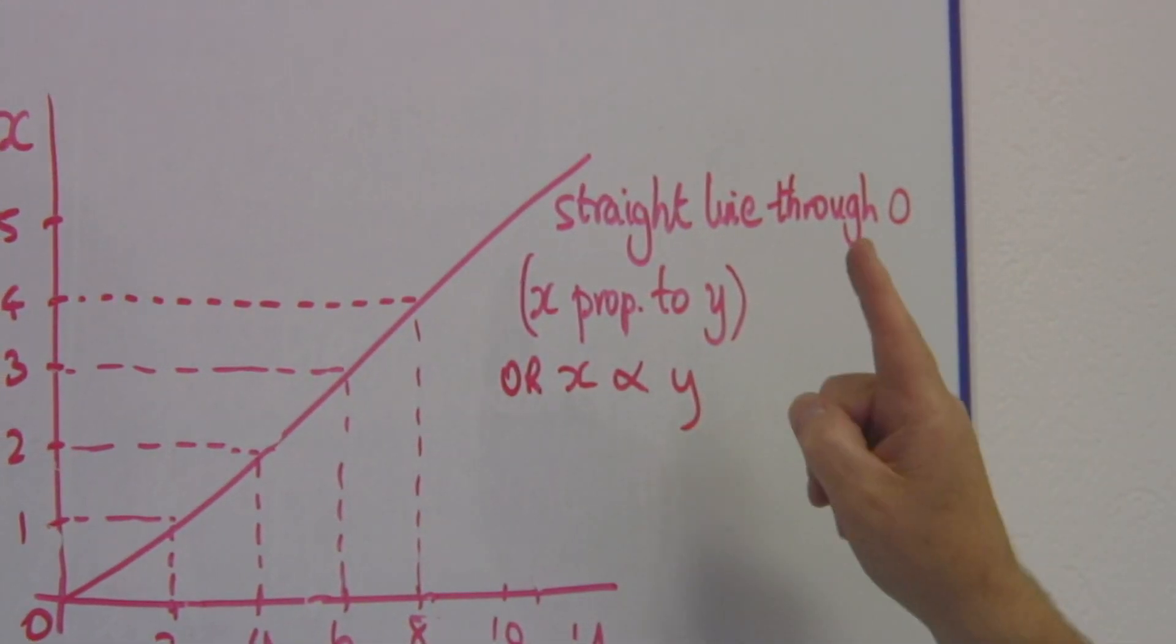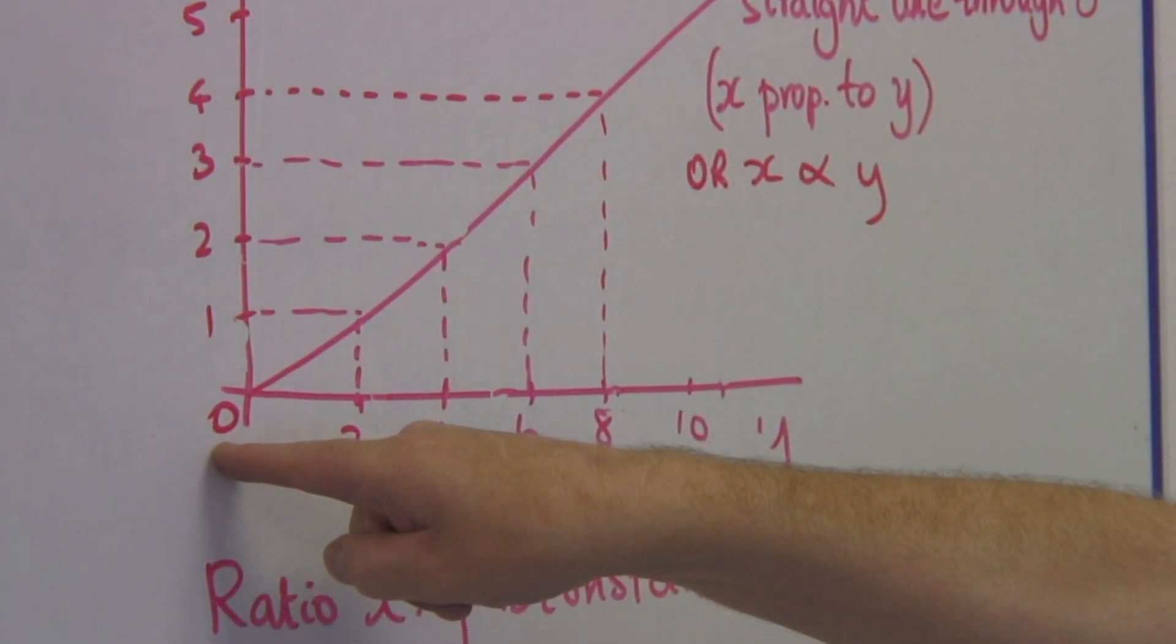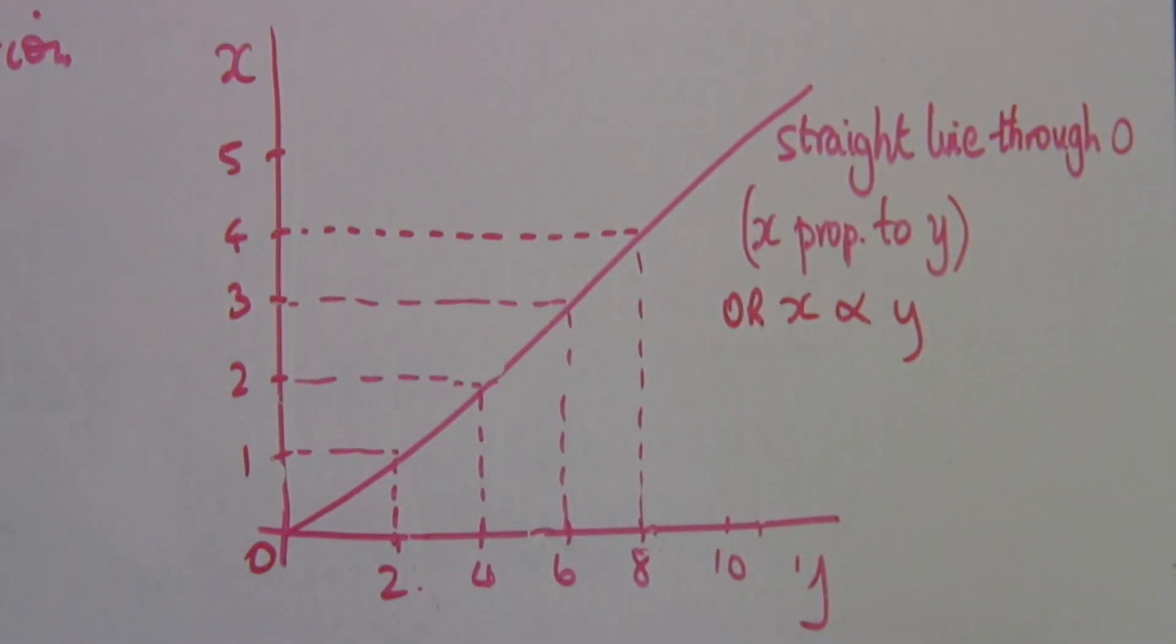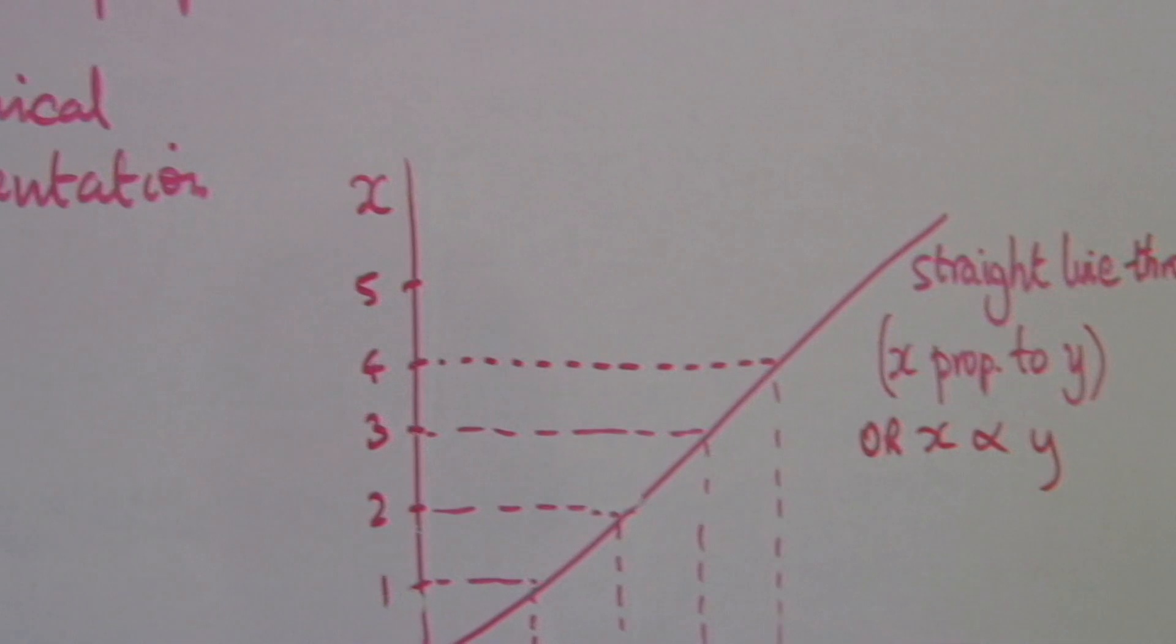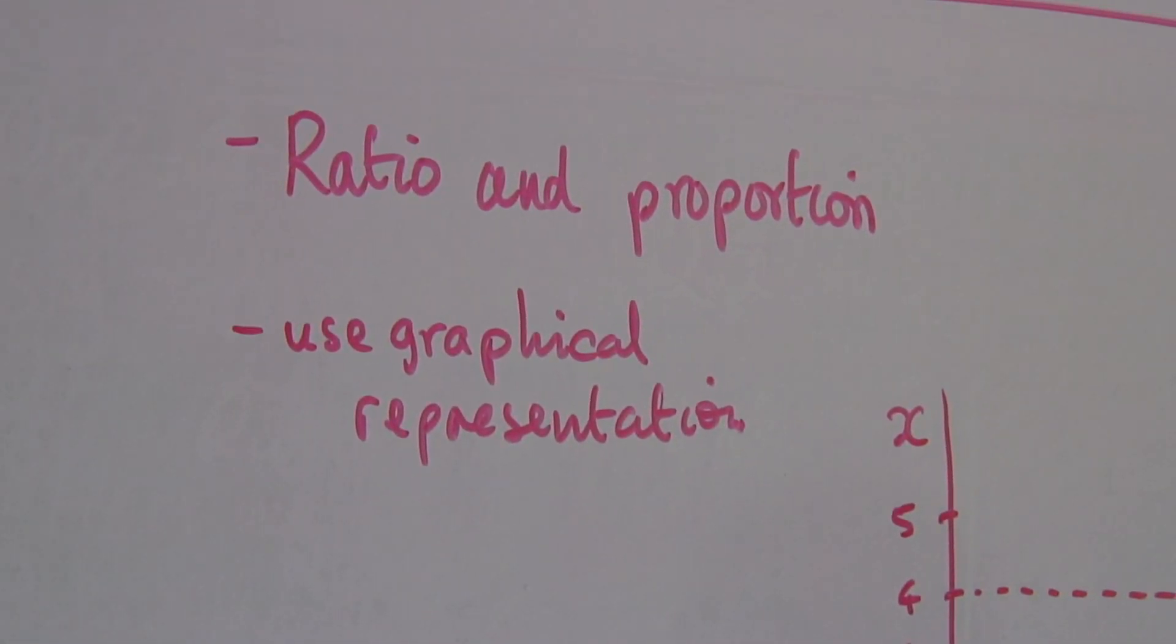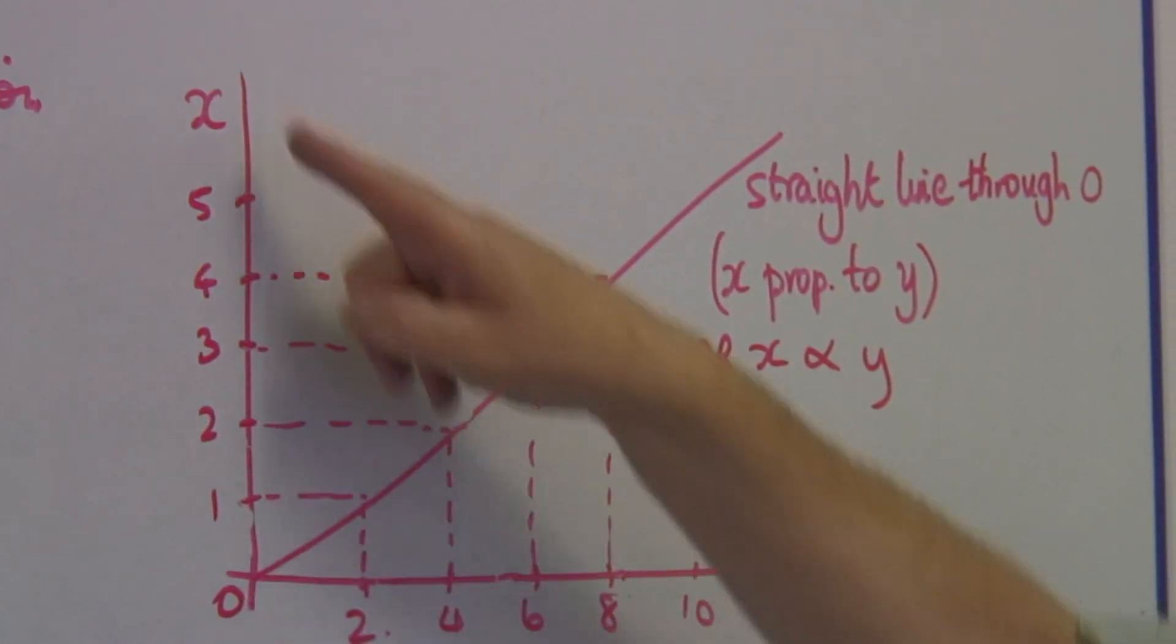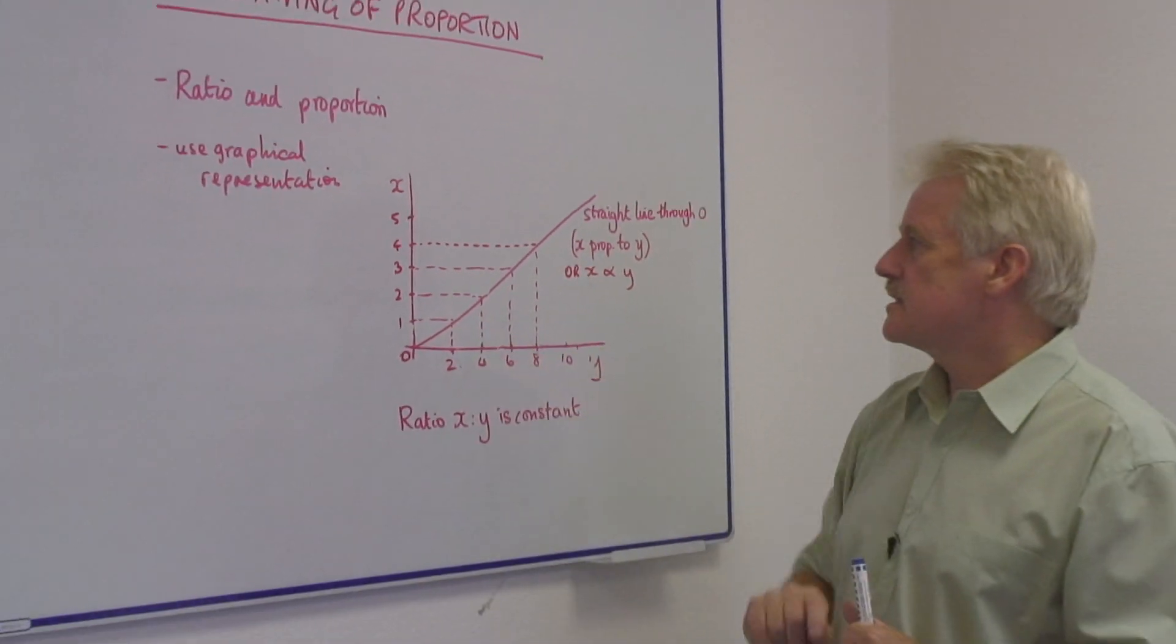And it's proportional because it goes through the zero point for both x and for y. So very important, ratio and proportion relate to graphical representations where the line here is straight, and in each case it goes through zero, and the ratio is the same.